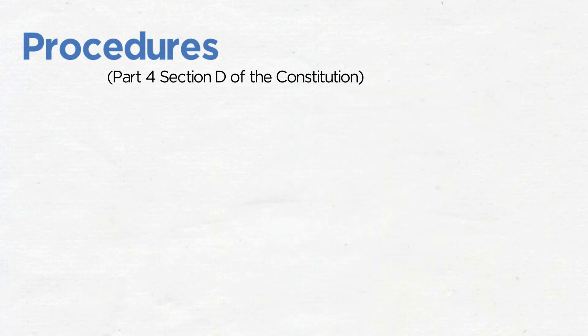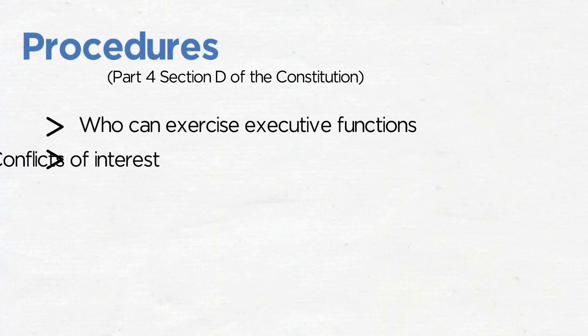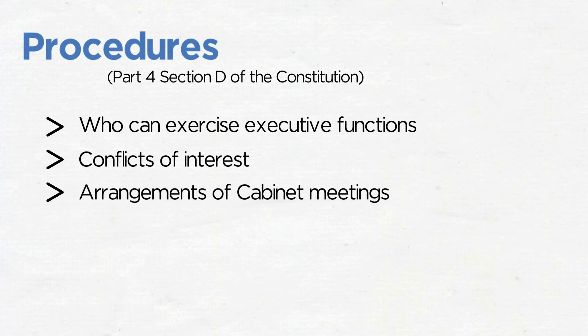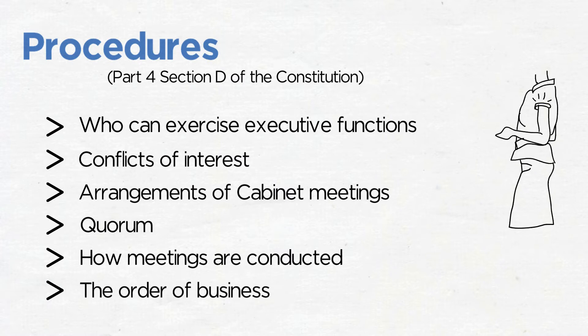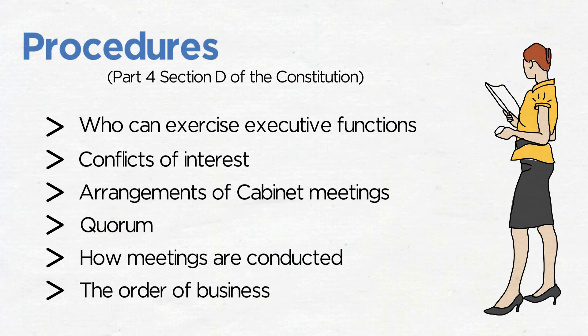The cabinet procedures are contained within Part 4, Section D of the Constitution. As an example, this sets out amongst other procedures: who can exercise executive functions, conflicts of interest, arrangements of cabinet meetings, quorum, how meetings are conducted, and the order of business. It is worth taking a look at Part 4, Section D of the Constitution, and if you have any queries, don't hesitate to ask Michelle Sachs, the monitoring officer, or Lorraine Bush, the democratic services manager.